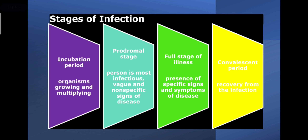The stages of infection: First is the incubation period, where the organism is growing and multiplying after entering the body. Next is the prodromal stage — this is when the person is most infectious, with vague and non-specific signs of disease. Then the full stage of illness, where specific signs and symptoms are present. Last is the convalescence period, also known as recovery from the infection.